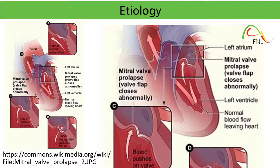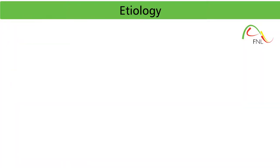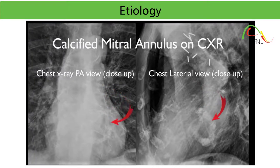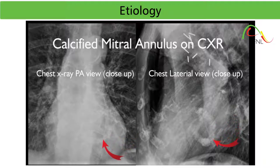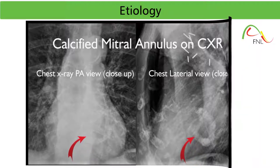The most common cause of primary mitral regurgitation is mitral valve prolapse. Other examples include mitral annular calcification, ruptured chordae tendinae, papillary muscle rupture, and leaflet perforation. Chest X-rays — close-ups of PA and lateral views — show mitral annular calcification, which is far more obvious on the lateral view, visible as an incomplete ring of bony density.